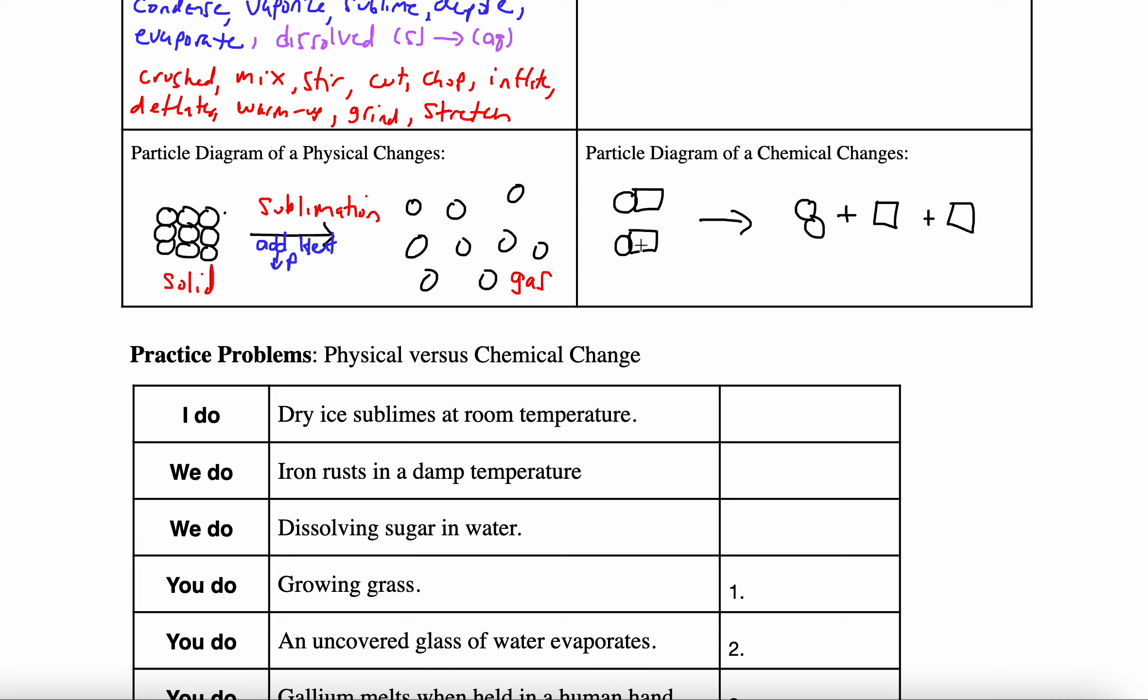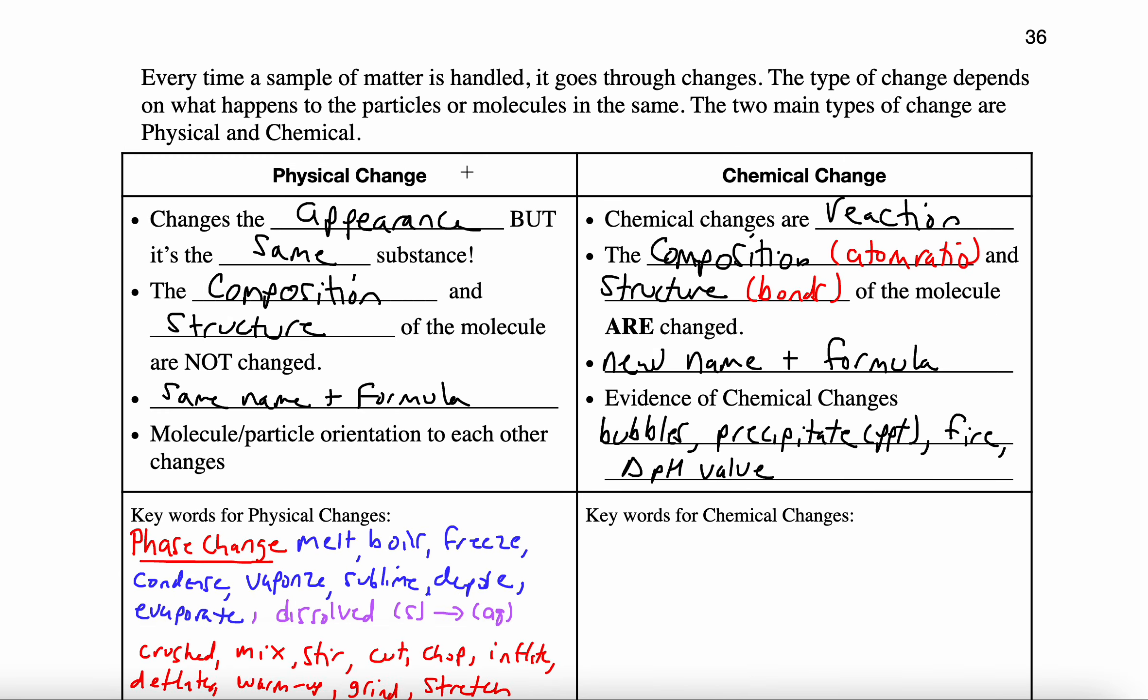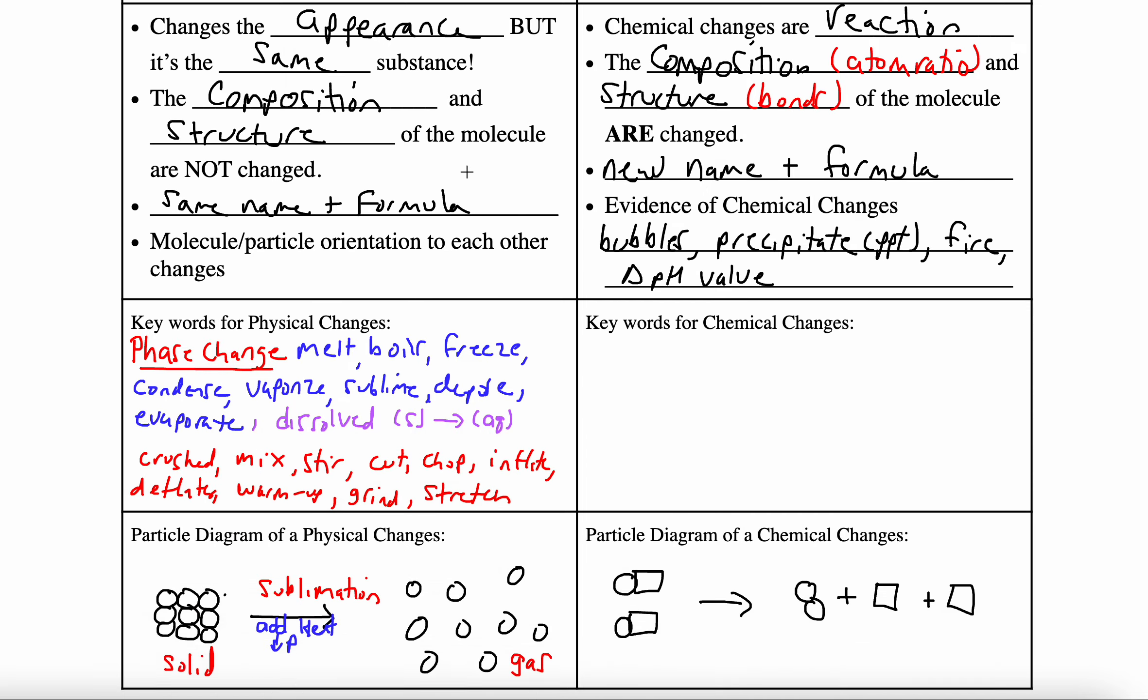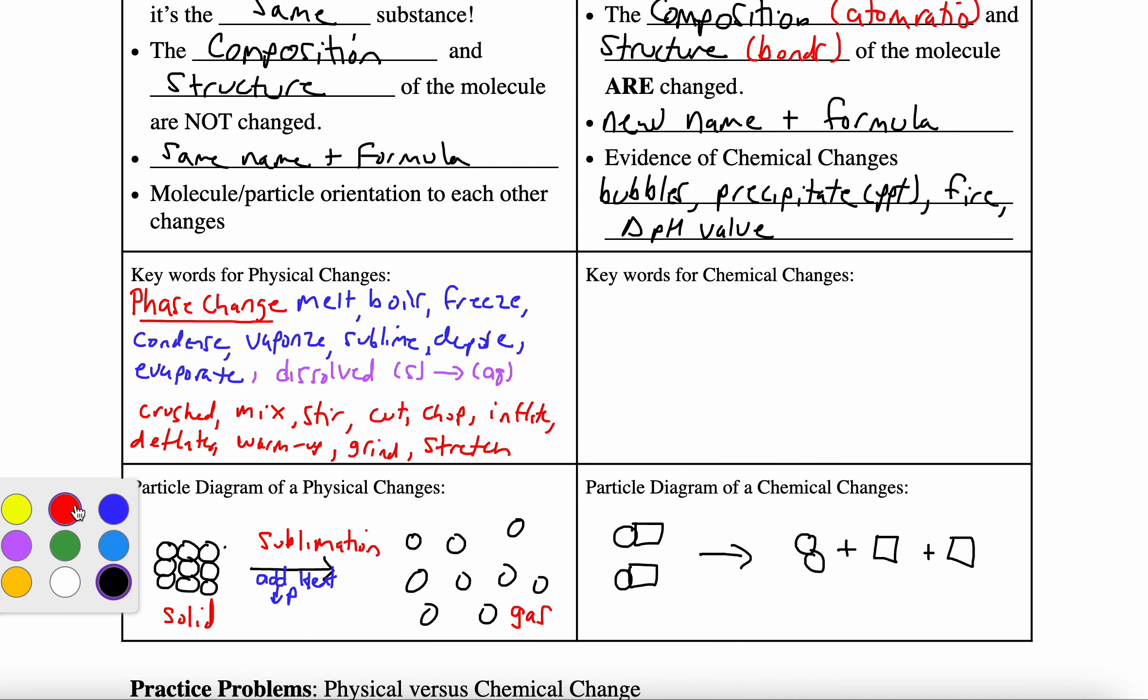The two particles I start with have a different ratio, composition, and structure compared to the particles I end with, meaning a chemical change has occurred. Key words to represent a chemical change: if it simply says the word reacts, that's an easy one.